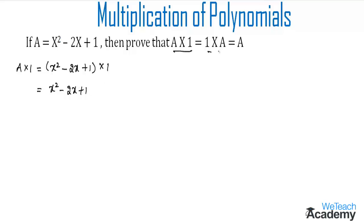Now let us consider 1 × A. So we have 1 into the polynomial x² - 2x + 1. By multiplying, 1 into x² is x², 1 with -2x gives -2x, and 1 one time is 1, giving x² - 2x + 1.